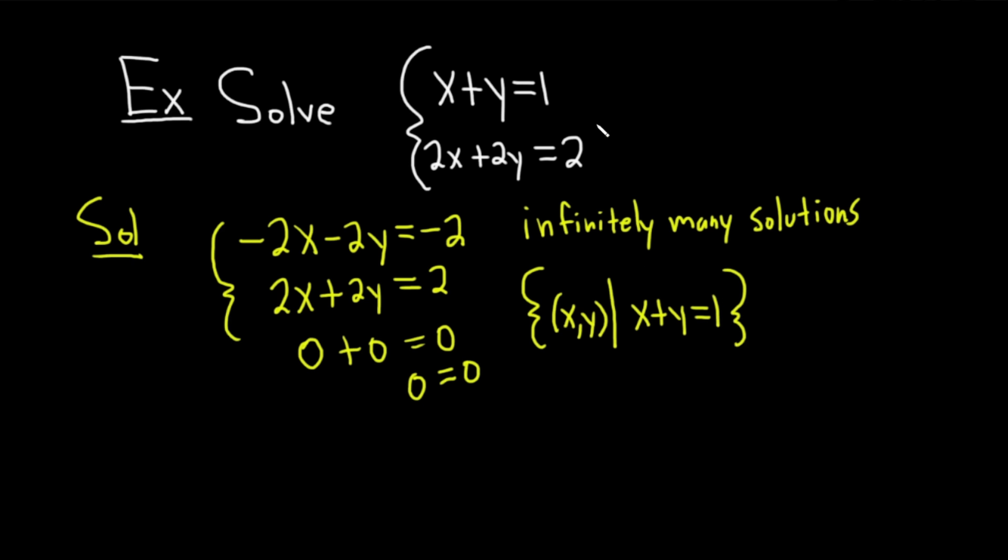So every single point on the line is a solution. What's happening here is we have the same line written twice. Basically, this first line, the second line is just the first line multiplied by 2. It's like we have a line, and right on top of it, we have another line. So every single point on the line is a point of intersection between these two lines. So every point on the line is a solution. Kind of a fun problem.